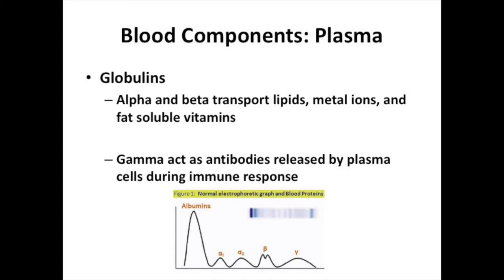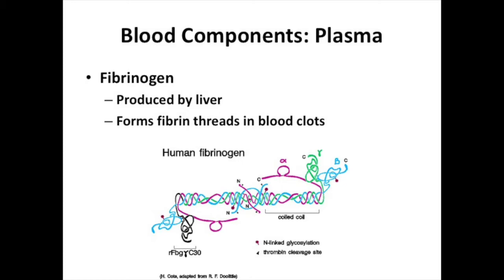Globulins are also dissolved in the plasma, also proteins, also made in the liver. There are three kinds: alpha globulins, beta globulins, and gamma globulins. Alpha and beta globulins act almost identically to albumin — they transport things like fats, metals, or vitamins. Gamma globulins are different; they're the odd duck of the globulin family. They have an immune system function and act like antibodies — substances that mark something for destruction. An antibody can't destroy a bacterium or virus itself, but it marks it so another cell knows to destroy it.